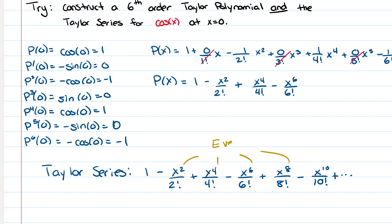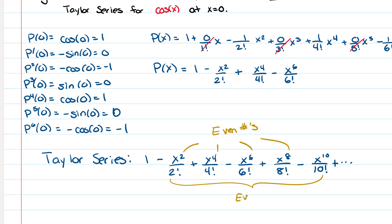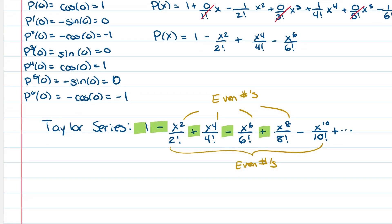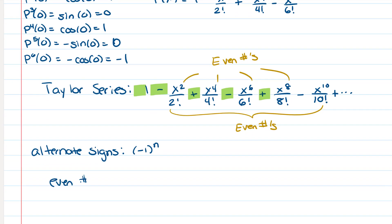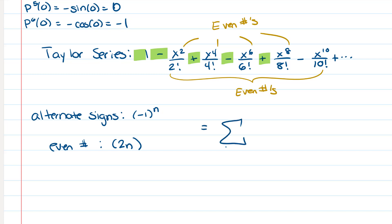Notice all the powers are even numbers and all the denominators are consecutive even number factorials: 2, 4, 6, …. The signs alternate, so we write (−1)ⁿ to get alternating signs starting positive. To get an even number we use 2n, so the sigma notation is: Σ from n = 0 to infinity of (−1)ⁿ / (2n)! · x^(2n), since each new n value increases the power by two.